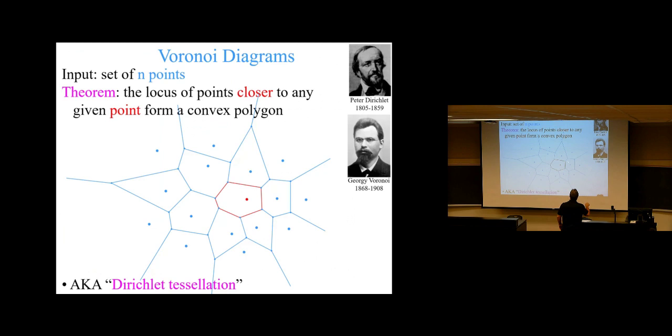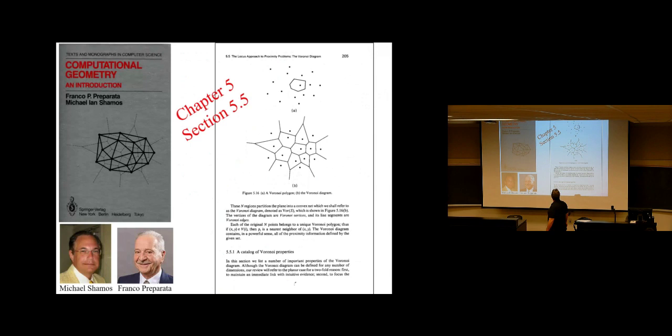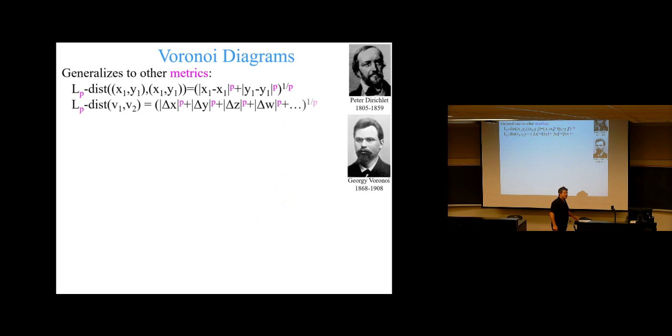Continuing with Voronoi diagrams from last time: order diagrams store proximity information. For every point in the point set, it constructs the locus of points — the convex polygon — where interior points are closer to that point than to any other point. You mentioned it captures a lot of problems where proximity information is important.